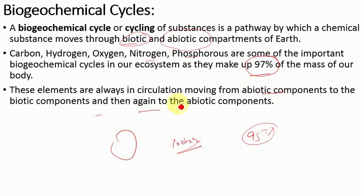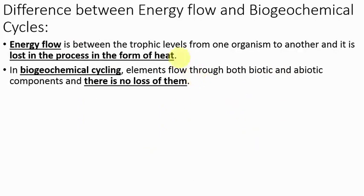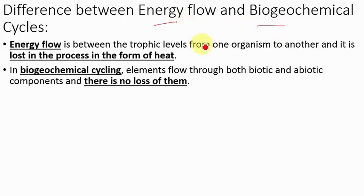Students who know about energy flow might wonder about the difference between energy flow and biogeochemical cycles. In energy flow, energy always flows from one trophic level to another within living organisms — only the biotic component is involved. Also, in energy flow, some amount of energy is always lost in the form of heat, so the same amount of energy available at the producer level will not be available at the top carnivore level.